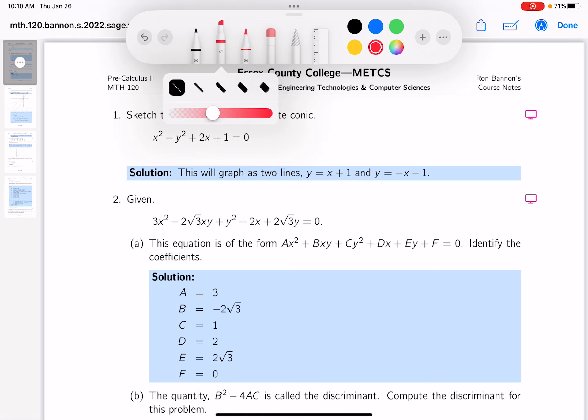Okay, this one says you're given something, and then they ask the question. They say the equation's in a particular form, and they want you to identify the A, the B, the C, the D, the E, and the F.